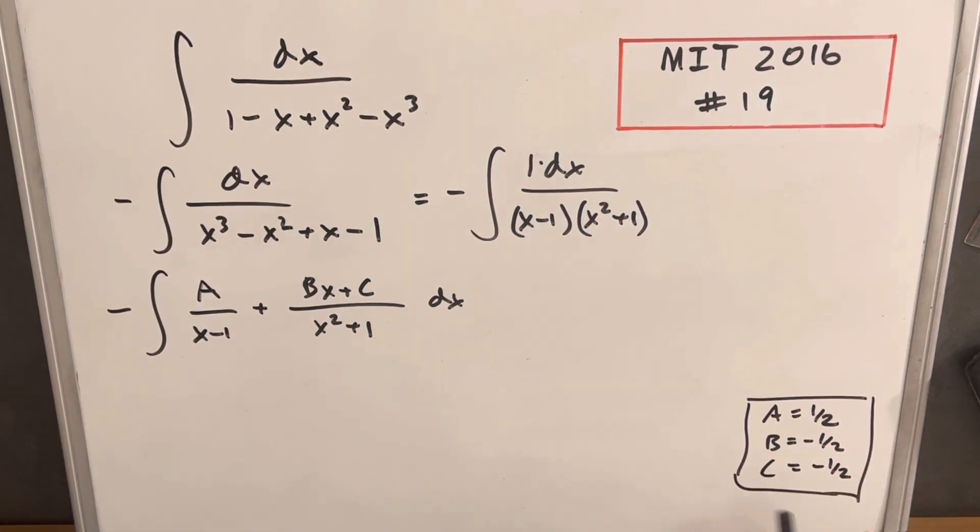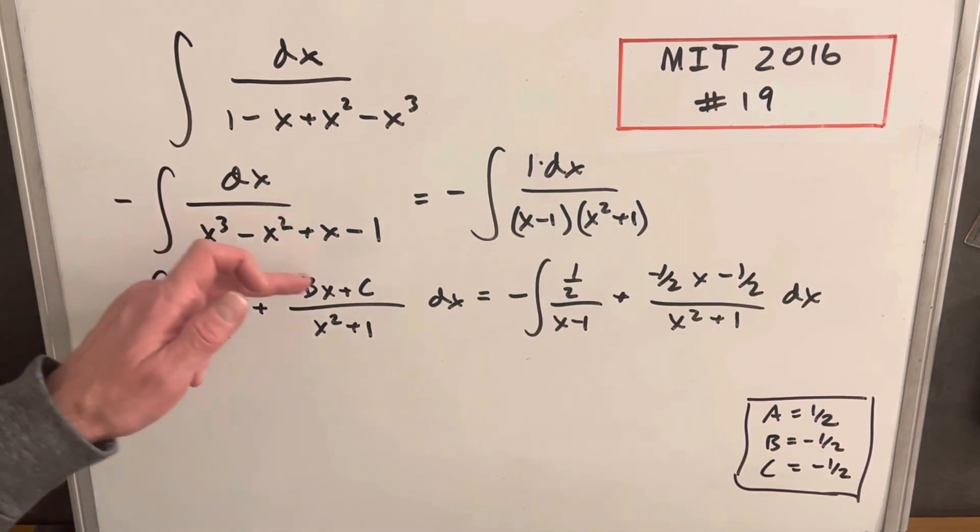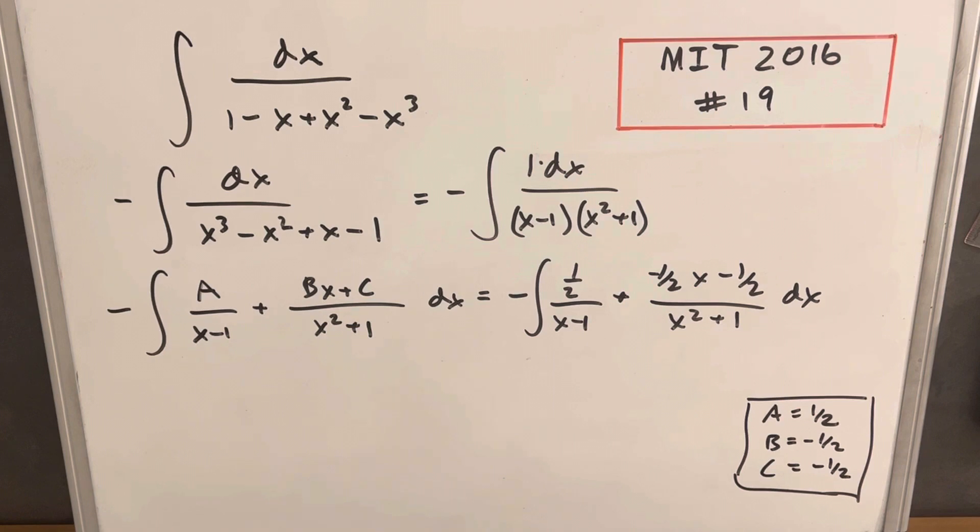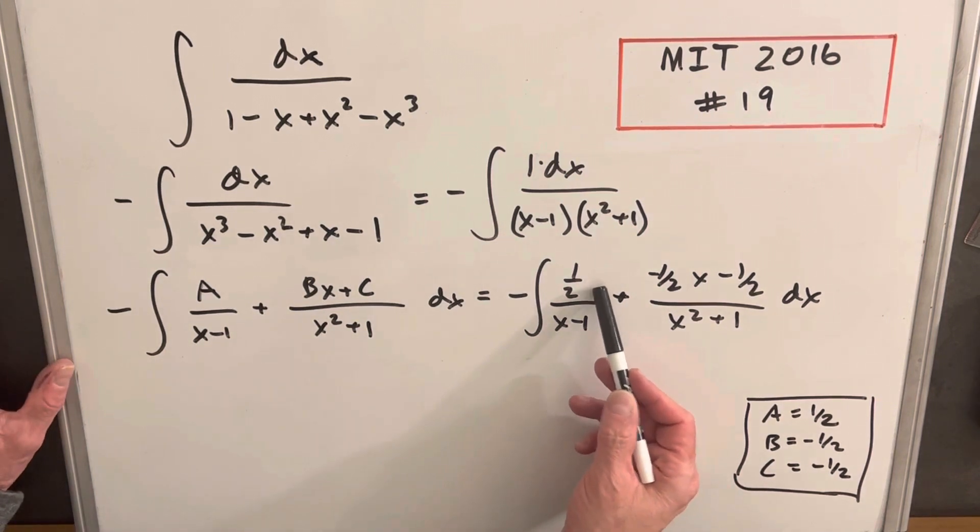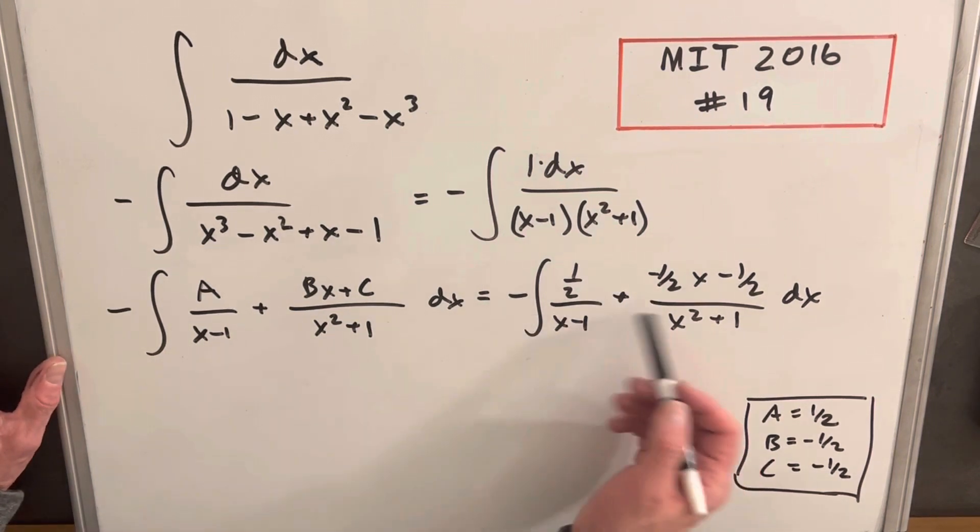Then all we need to do is take all these values, plug them back in here, and then we can integrate. Okay, so now I've just plugged in all of our values for A, B, and C over here. Before we integrate, I'm going to do is pull out, we're going to pull out the half in front of the integrals. And then also, we can split this into three separate integrals.